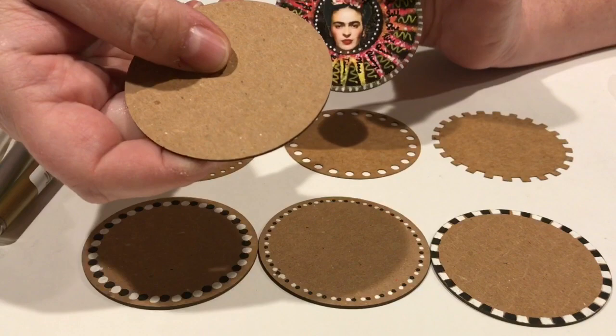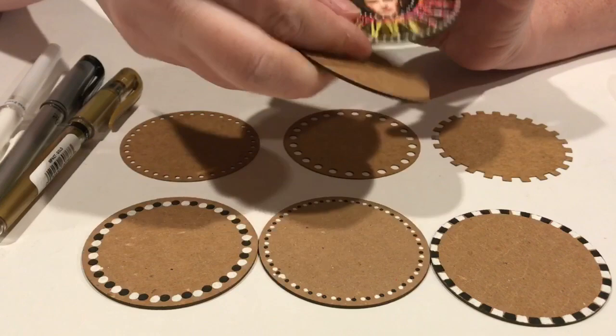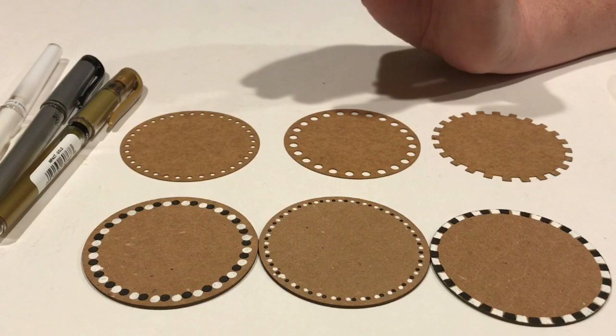There's also an artist trading coin kit in the shop that comes with the chipboard blanks and comes with four cool stencils for you to use on your coins. Then it also comes with some paper overlays if you want to do collage on top of them.